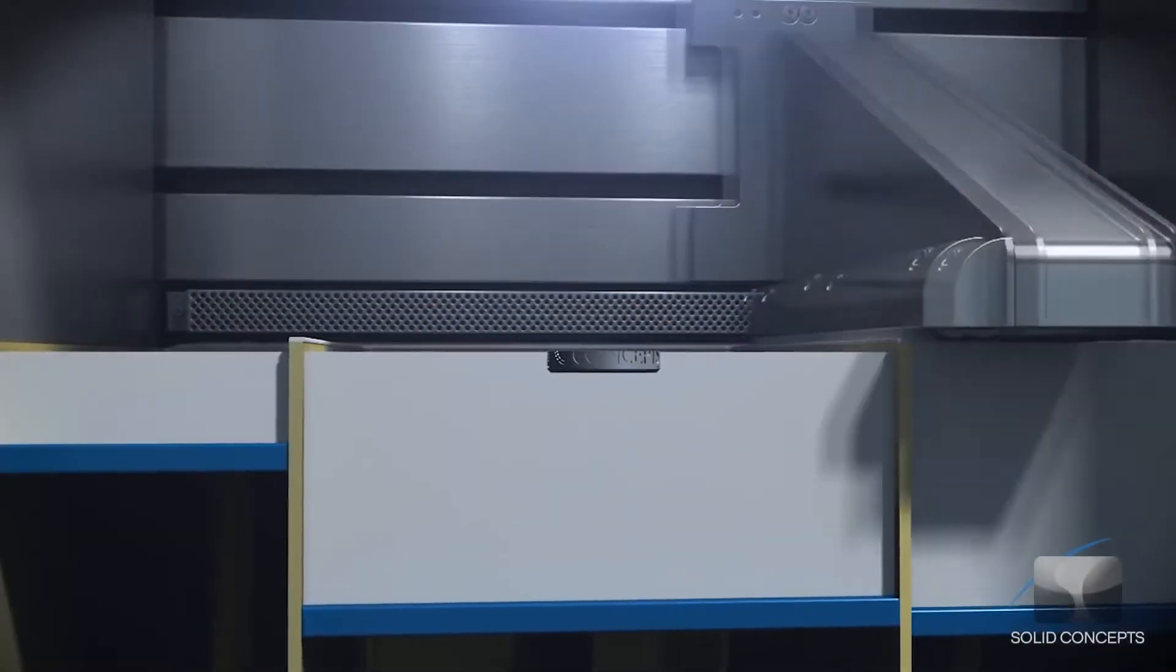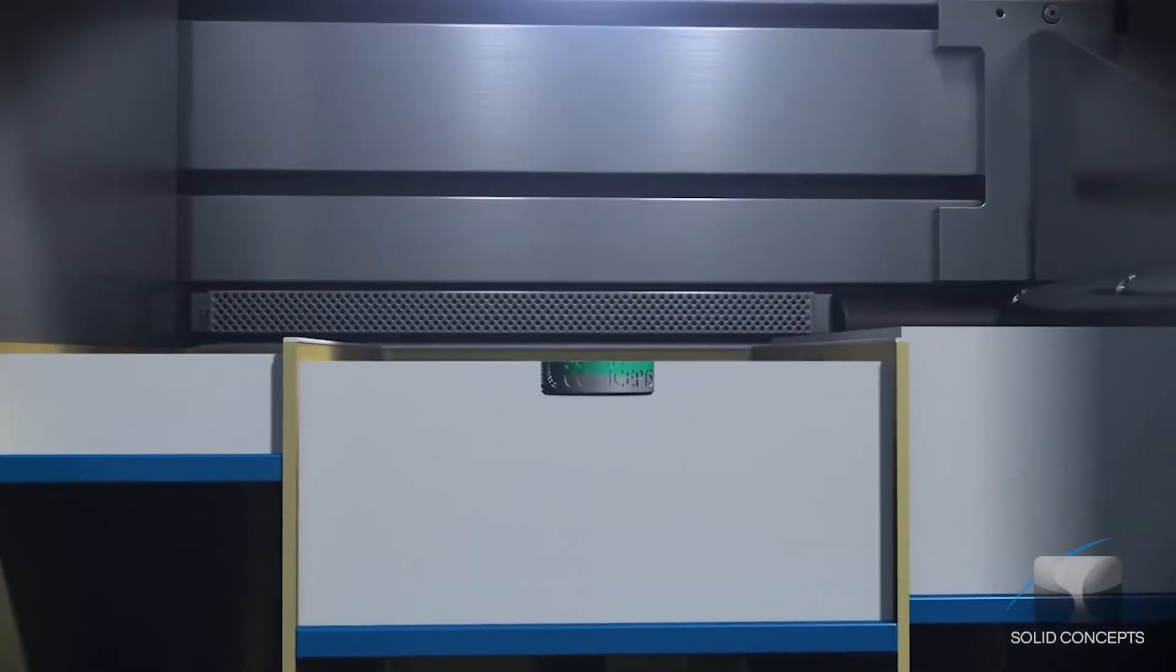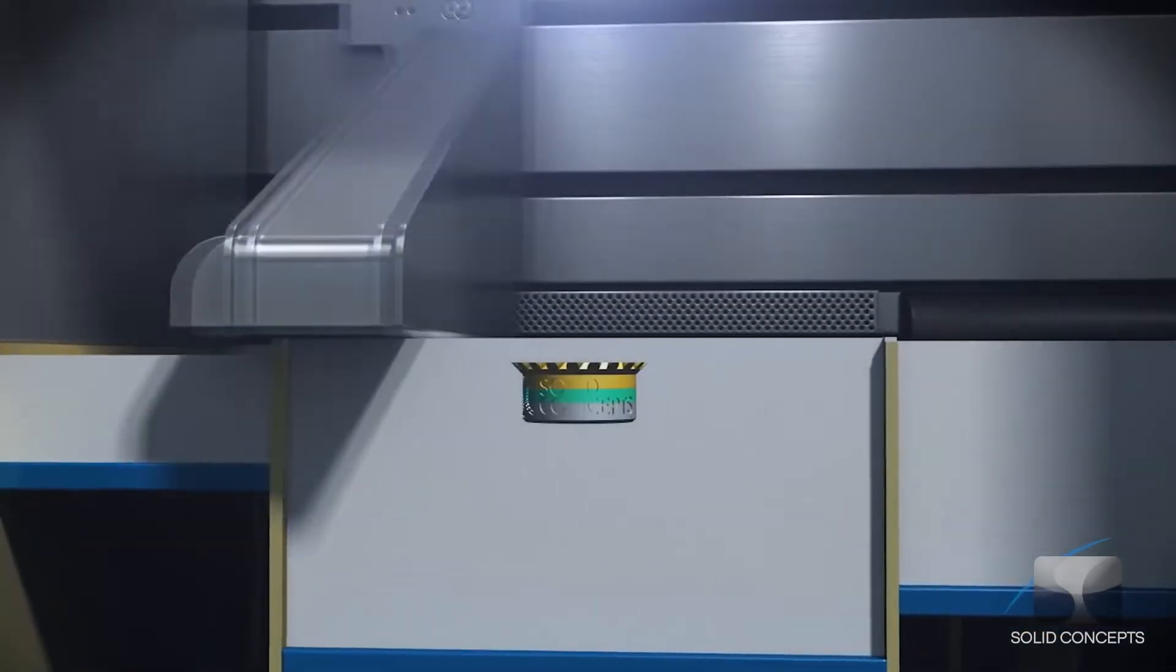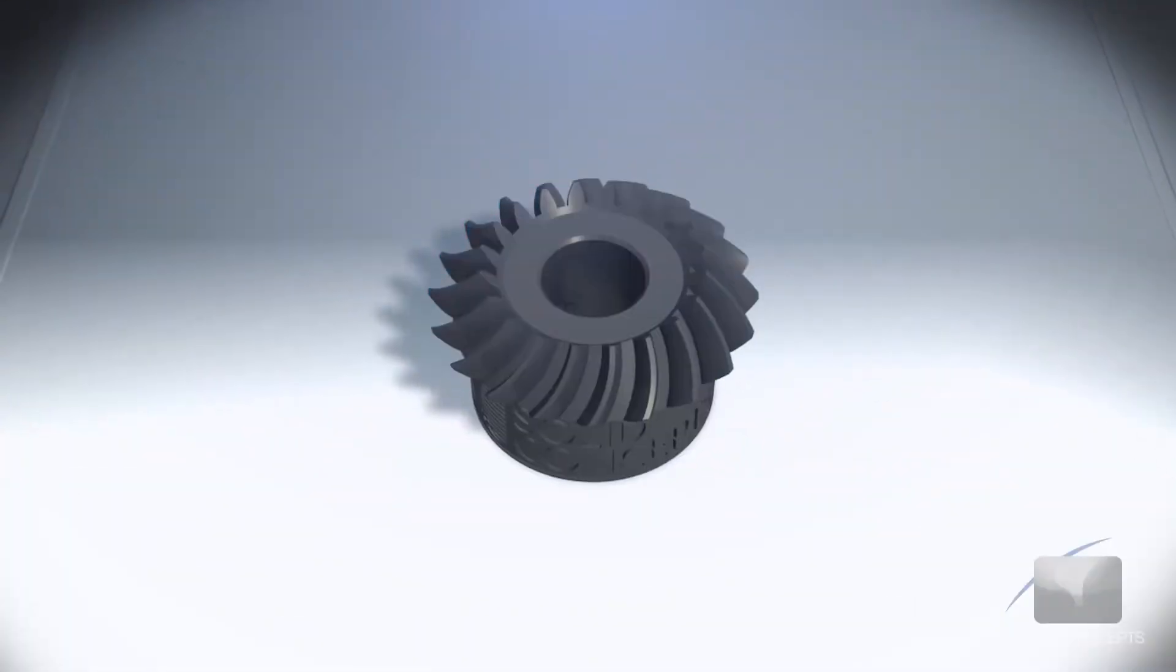Once a single layer is complete, the base plate is lowered just enough to make room for the next layer. More material is raised from the cartridge and recoated evenly upon the previously sintered layer.